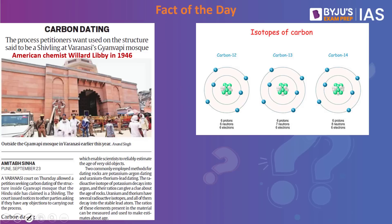The fact of the day is carbon dating. Carbon dating was developed by American chemist William Libby in 1946. It is a method used to determine the age of matter that was once living. There are three isotopes of carbon: carbon-12 (6 protons, 6 neutrons, 6 electrons), carbon-13 (6 protons, 7 neutrons, 6 electrons), and carbon-14 (6 protons, 8 neutrons, 6 electrons). Carbon-12 is the most stable and most common isotope.